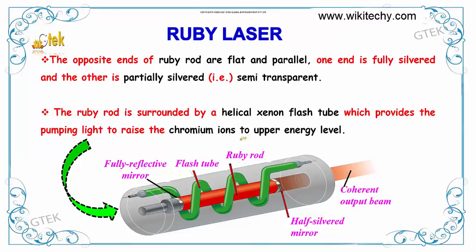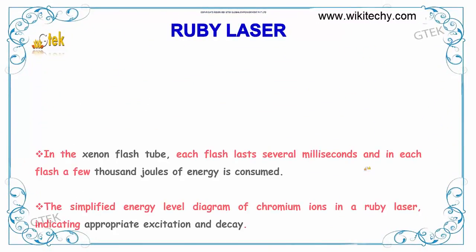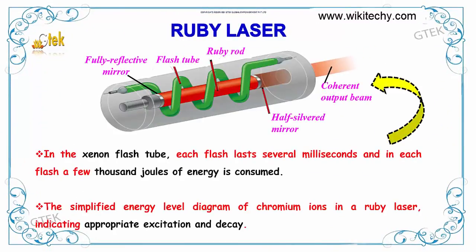The ruby rod is surrounded by a helical xenon flash tube which provides the pumping light to raise the chromium ions to the upper energy level. In this xenon flash tube, each flash lasts several milliseconds and in each flash a few thousand joules of energy is consumed.